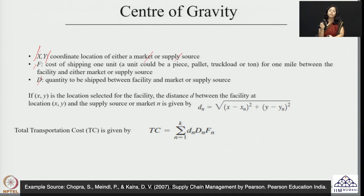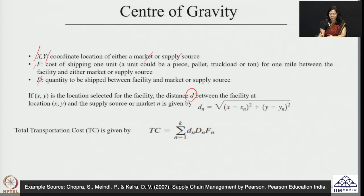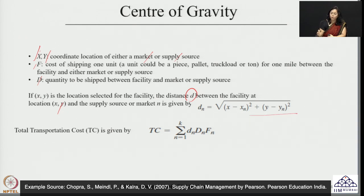If we are trying to find the location of the new facility such that the total cost is minimized, we first have to find the distance — denoted as small d — between the facility at the unknown location (coordinates x and y) and the existing supply source or market. This distance is calculated using the Euclidean distance formula.